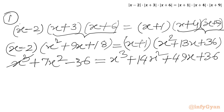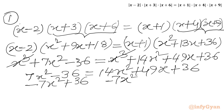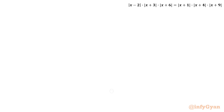Now we cancel x³ from both sides. We get 7x² - 36 equal to 14x² + 49x + 36. Subtracting 7x² and adding 36 from both sides gives 0 equal to 7x² + 49x + 72. So for Case 1 we have the quadratic equation 7x² + 49x + 72 equal to 0. Let us use the quadratic formula to solve this.